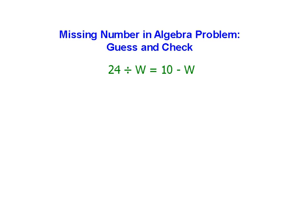Let's try the next number. How about 4? If I plug a 4 into here and a 4 into there, 24 divided by 4 is 6. 10 minus 4 is 6. Both sides come out the same, equaling 6. When I plug a 4 in, so W equals 4. That's how you guess and check for algebra problems.